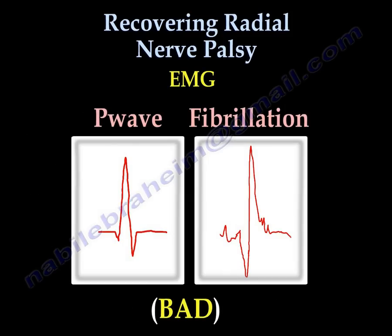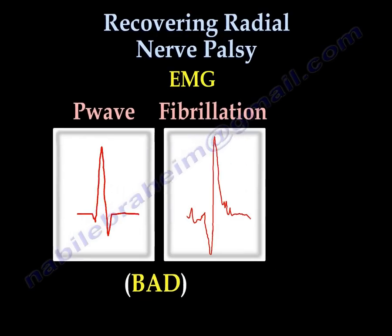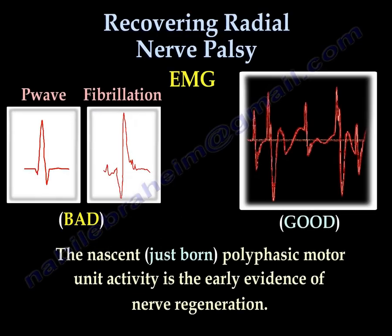Regarding EMG findings: P waves are bad. Fibrillations are bad. Early large polyphasic waves are good. Nascent polyphasic motor unit activity is an early sign of nerve regeneration.